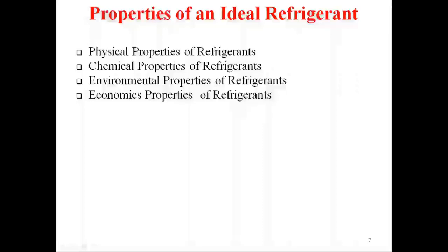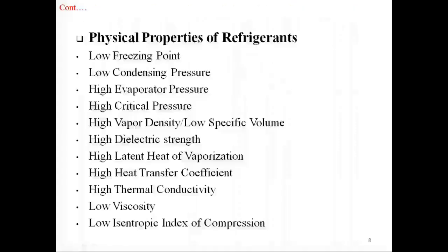Next is properties of an ideal refrigerant. We can divide these into four types: physical properties, chemical properties, environmental properties, and economic properties. First, physical properties. Refrigerants should have a low freezing point compared to normal operating conditions; otherwise it will freeze during application.